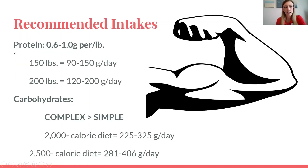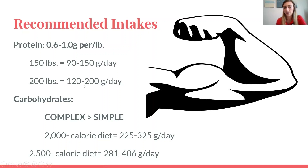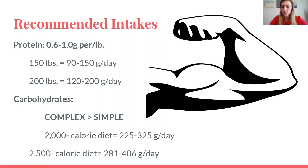Here are the recommendations. For protein, on average you want 0.6 to 1 gram per pound. If you are 150 pounds, at the low end you want 90 grams per day; at the high end, 150 grams per day. For carbohydrates, you want complex rather than simple — simple carbs are like white bread, while complex is the whole grain option. In a 2,000 calorie per day diet, about 225 to 325 grams per day should be carbohydrates; for 2,500 calories, 281 to 406 grams per day is recommended.